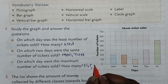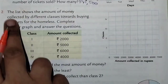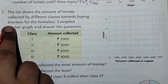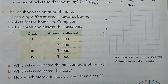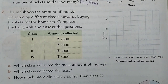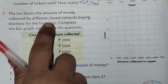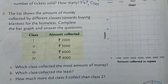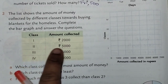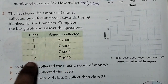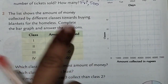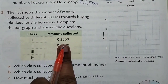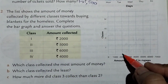Question number 2: The list shows the amount of money collected by different classes towards buying blankets for the homeless. Complete the bar chart and answer the questions. Class 1 collected rupees 2000, Class 2 collected 5000, Class 3 collected 6000, and Class 4 collected 4000. Read the information carefully and complete the bars. Class 1's bar will be drawn at 2000.